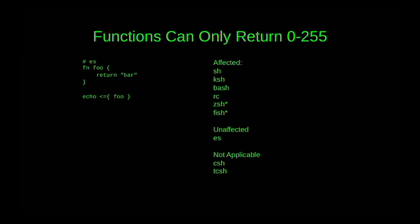Functions can only return 0 to 255. The obvious reason is so that functions act like processes with the same return type. But if you want to return something else, you have to go through contortions — either setting a global variable or printing and capturing output, but then you'd better hope your function doesn't call anything else that produces output. The ES shell allows richer return types, but you need a special syntax to call them.